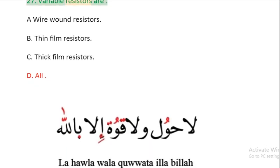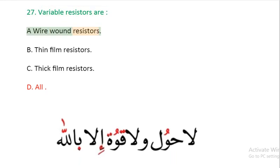Question 27: Variable resistors are: A: wire wound resistors. B: thin film resistors. C: thick film resistors. D: all.